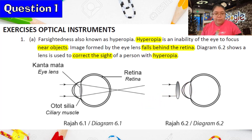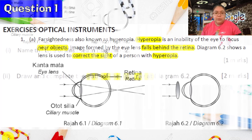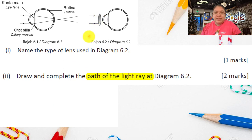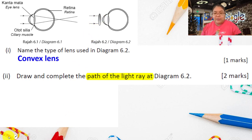Now we look at the first question: name the type of lens used in diagram 6.2. You refer to 6.2 — this one is thicker at the center, so this lens we call it a convex lens.